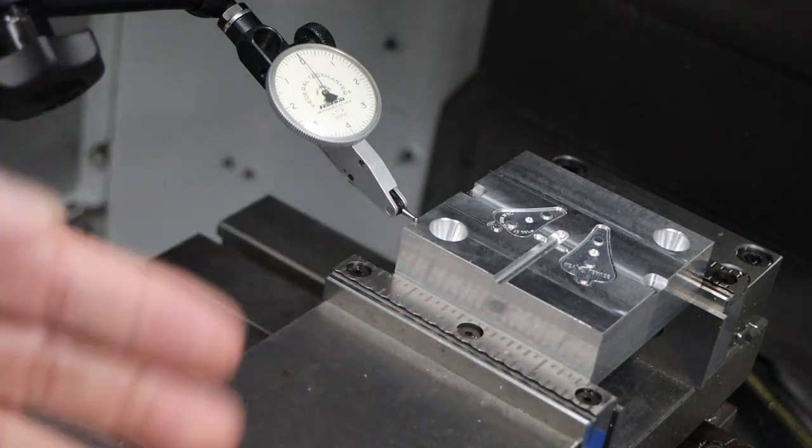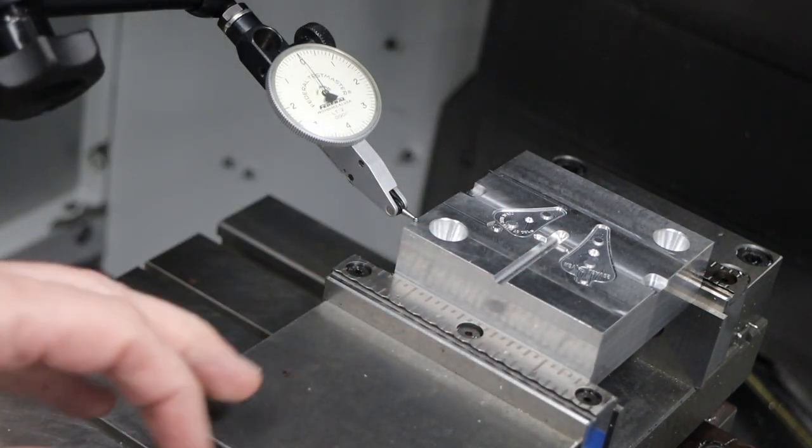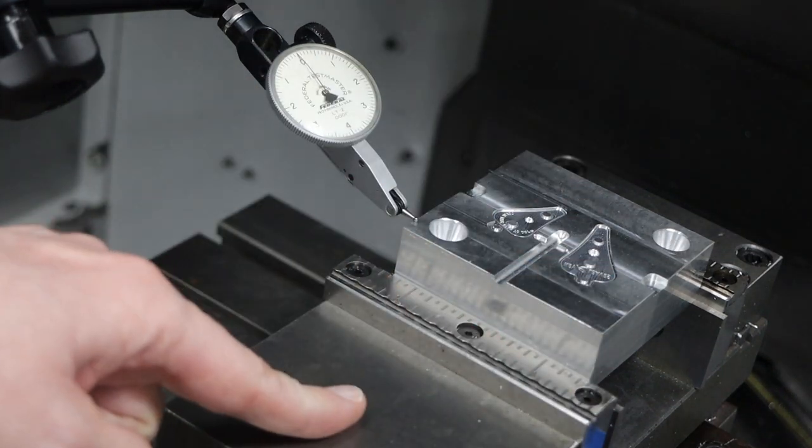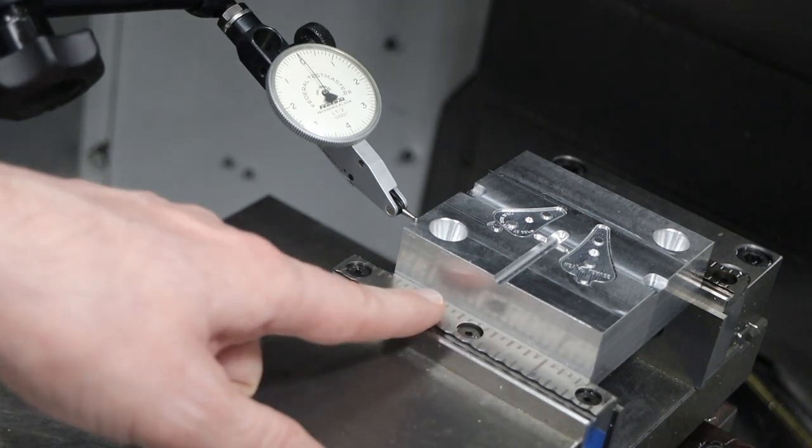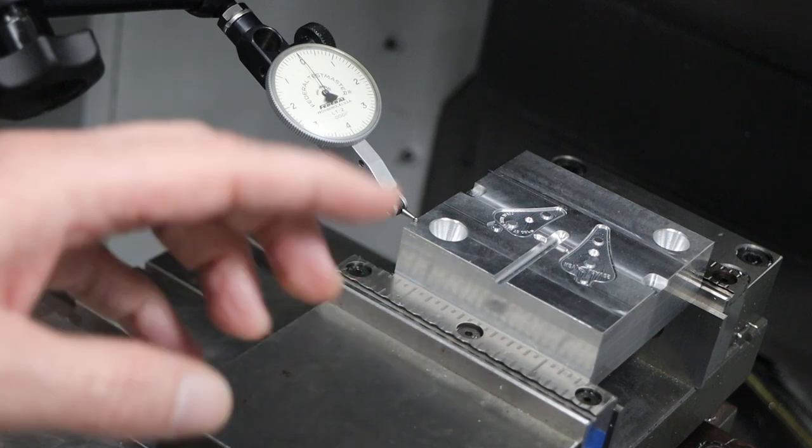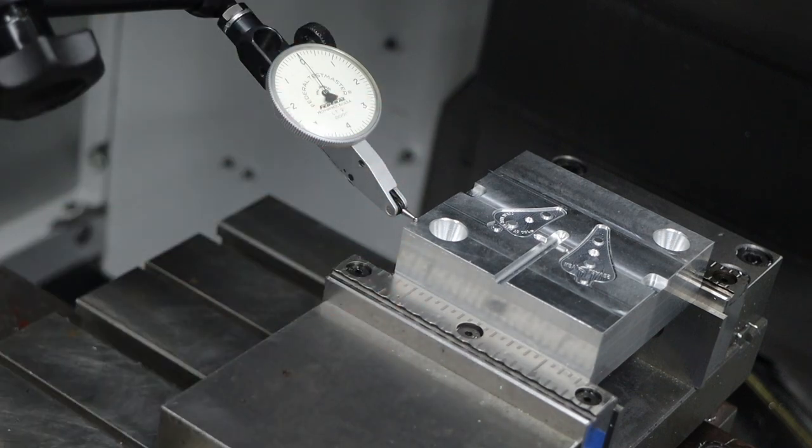This vise, even though I have a love-hate relationship with it, is plenty accurate enough, as long as I'm using the parallels when I need things to be accurate. For first operations and roughing and that type of thing, the Piranha jaws are fine, but for precision, the parallels.